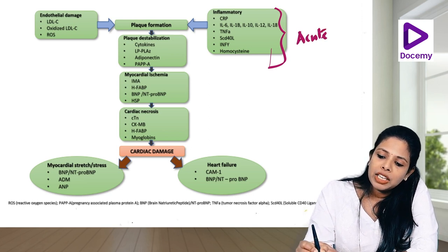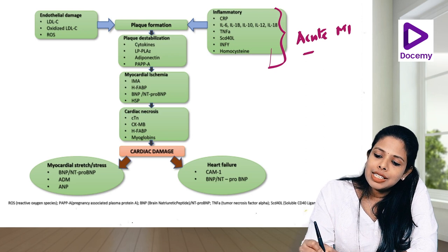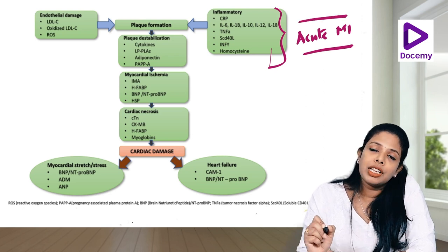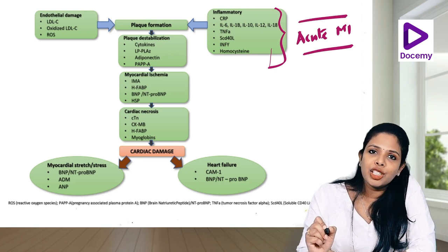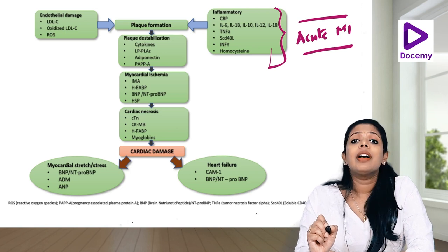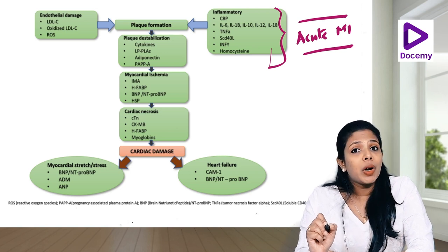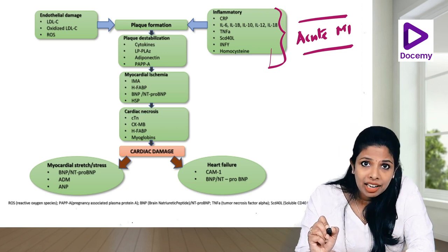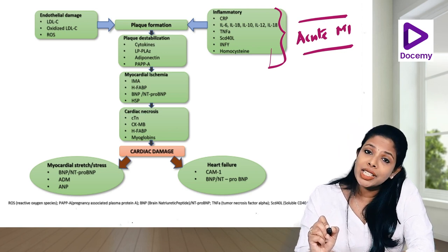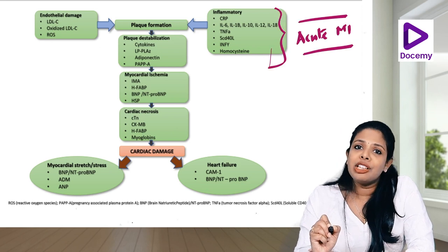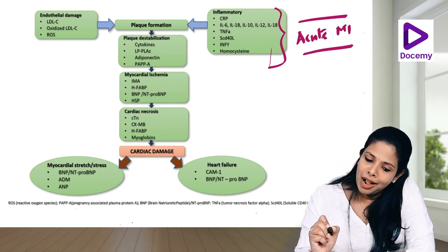Whenever you get a patient with acute MI, if the CRP, IL-6, or TNF-alpha is elevated, do not worry. It is not due to infection — the acute myocardial infarction itself can cause elevated levels of inflammatory markers.